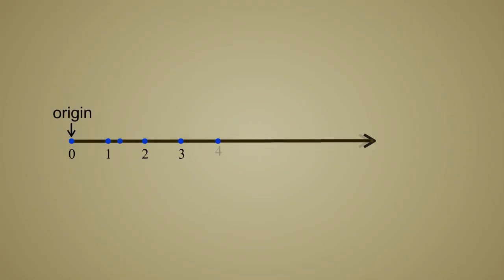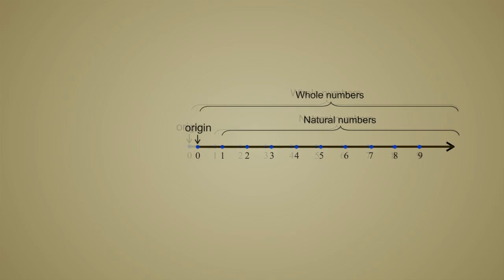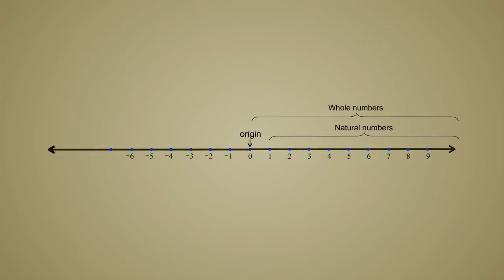Integers can be represented on a number line just like natural numbers and whole numbers. But now the number line must go off to infinity in both directions.